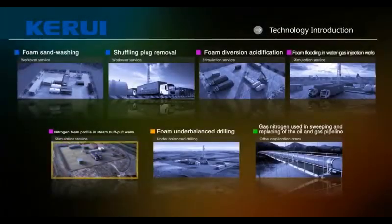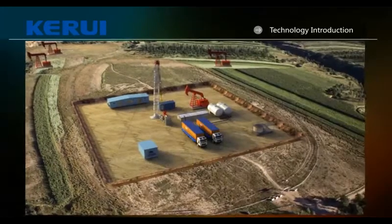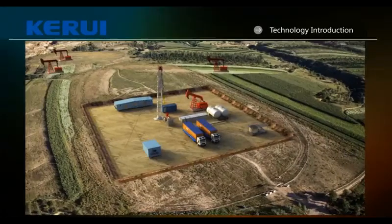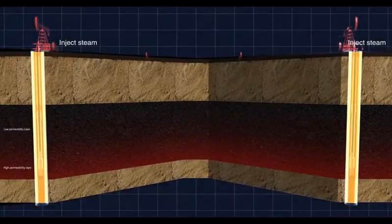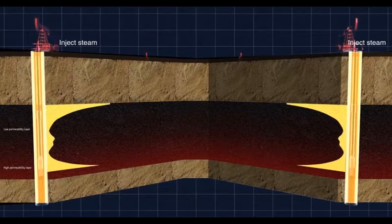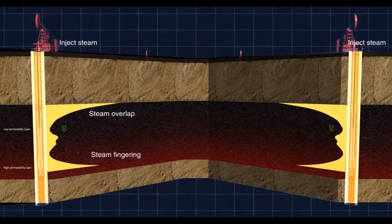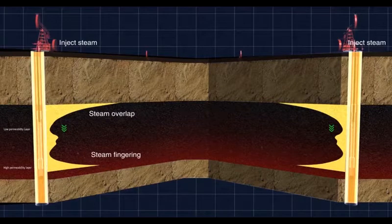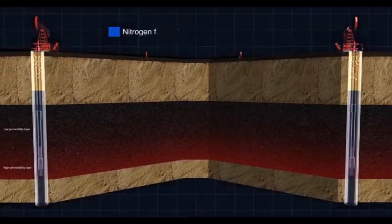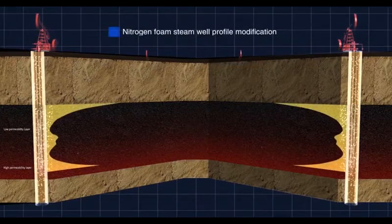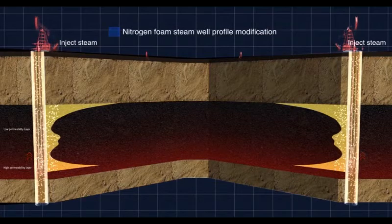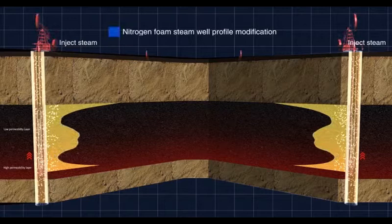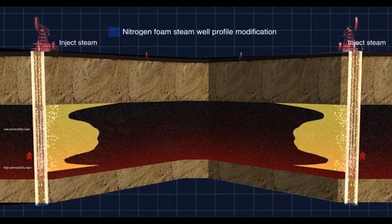Steam channeling is a serious issue in heavy oil steam injection thermal recovery wells. Due to formation heterogeneity, development effect is poor because of steam overlay and low steam sweep efficiency. Nitrogen foam forms a foam barrier in the formation which reduces steam flow, improves steam injection pressure and steam swept volume, and efficiently resolves steam channeling and steam overlay. This increases steam injection into medium-low permeable layers and high oil saturation layers, making steam well distributed and improving steam utilization.